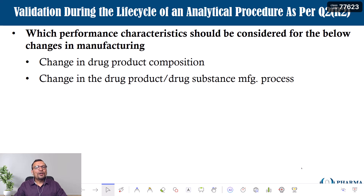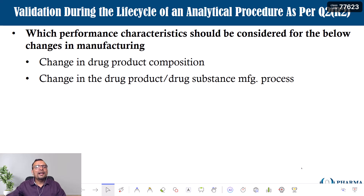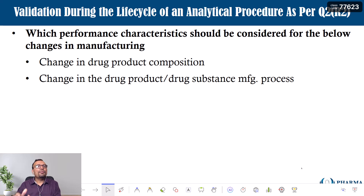How is a temperature change going to impact the analytical testing procedure? What is going to be the change because of the change in temperature during API manufacturing? That change has to be identified — understand why the change has been proposed in the manufacturing process, and based on that you will be able to understand what risk is associated with your analytical procedure. Most of the time, if changing the process does not change any drug characteristics — for example, if there is no addition of any impurity or no change in the performance of the drug product — there may be no need to conduct partial validation for all parameters.